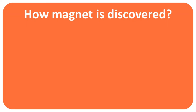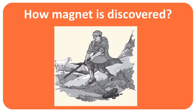Now, who discovered this substance — the magnet? There is a story about a shepherd named Magnus who lived in Magnesia in ancient Greece. Magnus was herding his sheep through the mountains when he suddenly noticed the metal cap of his stick and the nail in his sandals got stuck to a rock. He began digging and discovered the first recorded lodestone.